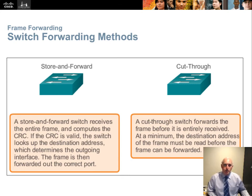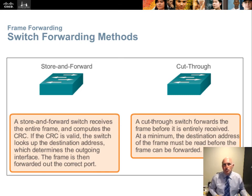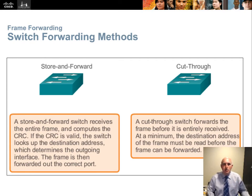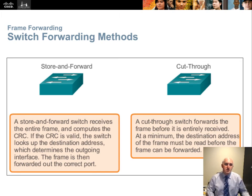Cut-through is an even faster forwarding method. The switch reads just enough of the frame to determine the destination MAC address, looks it up in the CAM MAC address table, and immediately forwards it out the egress port — so bits are moving out the egress port while other bits in that frame are still arriving. The consequence is you can't do the CRC redundancy check, since those bits are at the far end of the frame and it's too late to check for errors. Cut-through is used on highly reliable parts of your network. If you have a high frame error rate, switch those ports to store-and-forward.